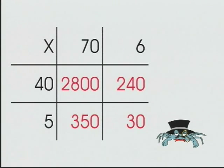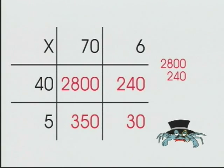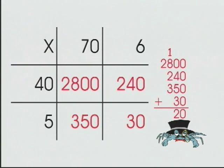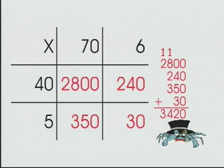To find the product, we then combine 2,800, 240, 350, and 30. The sum: 0 ones, 12 tens, 14 hundreds, 3 thousands. The product of 45 times 76 is 3,420.